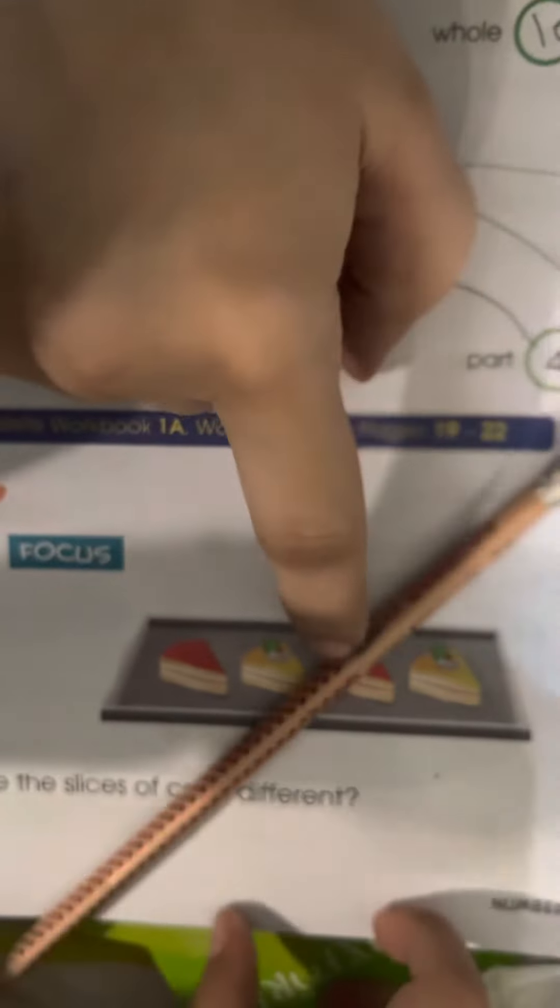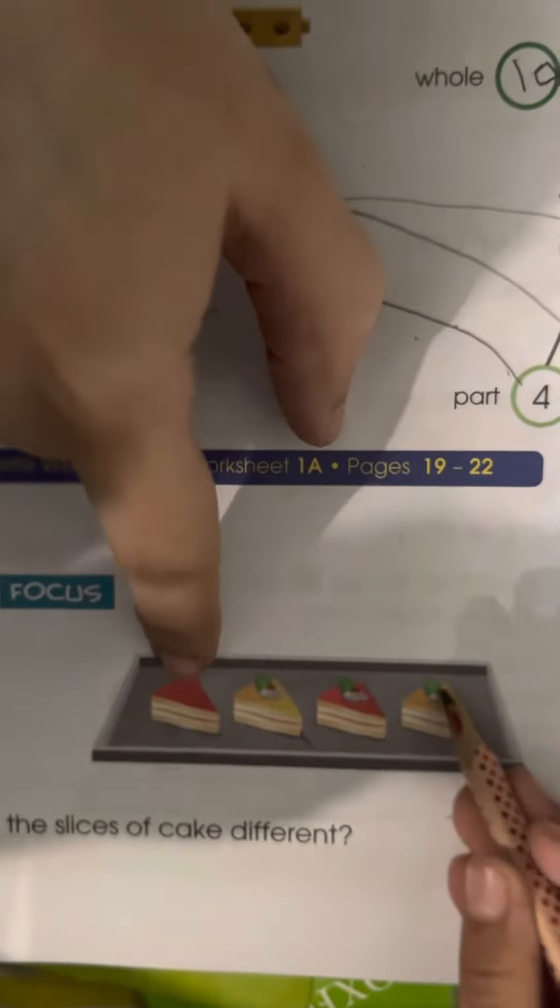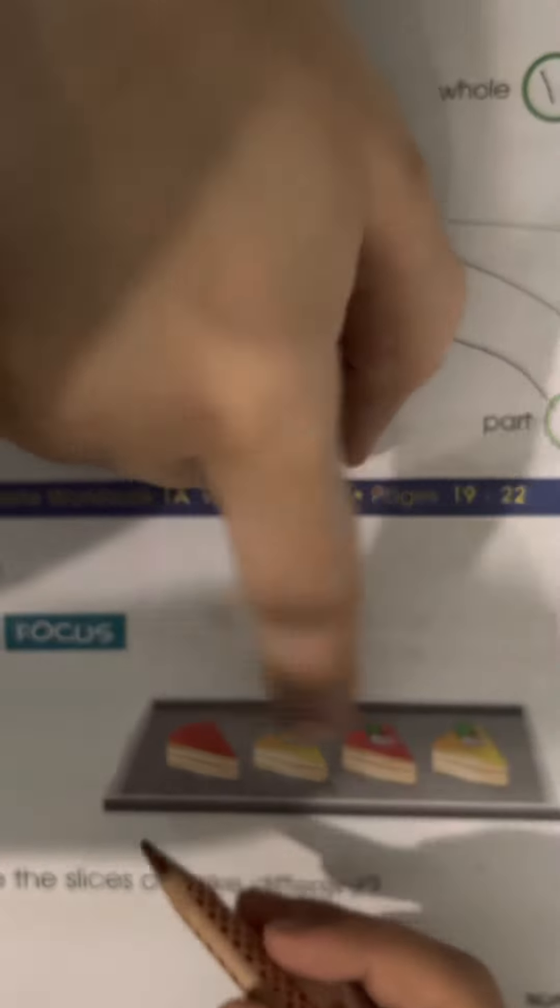This one is yellow, this one is red, this one is yellow, and this one is also red. But this slice has nothing on the top. All these slices have something on their top. Why is this red different? Tell me.